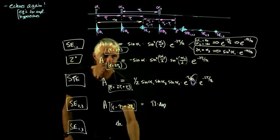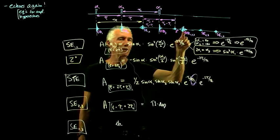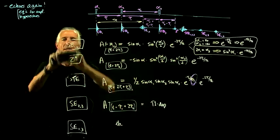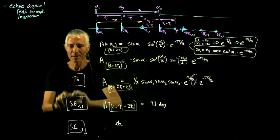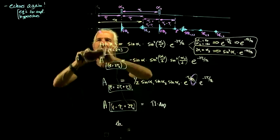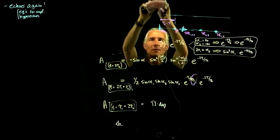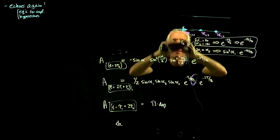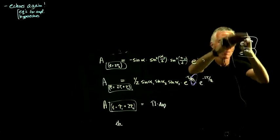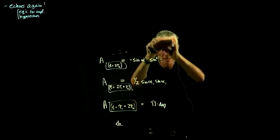Any questions about echoes? Remember: when collecting a sequence and making an image, you're collecting data throughout the entire echo, but the center of the echo — the center of k-space — is a particularly important data point with an outsized effect on what the image looks like. That's why we pay attention to these echo amplitude equations; they refer to just that single maximum point at the middle of the echo when all spins realign.